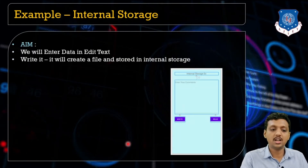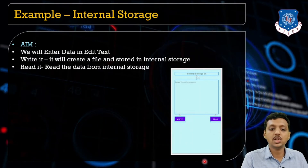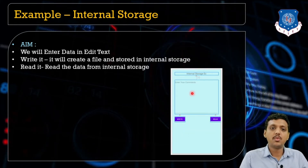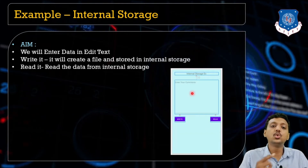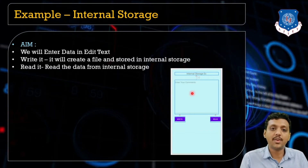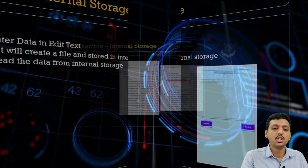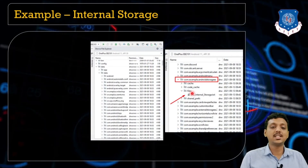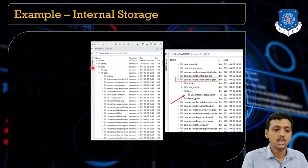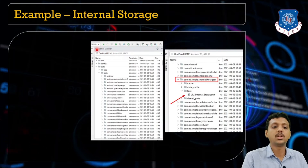In this lecture we are going to build an application with one EditText. When you click the write button, all data is stored in a newly created file. When you click the read button, the program reads the data from the file and displays it in the EditText. To see where the files are stored, open the Device File Explorer and navigate to the data folder.